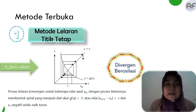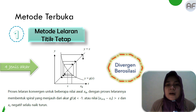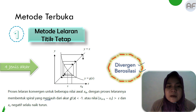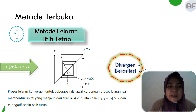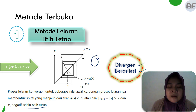Yang terakhir adalah divergent berosilasi. Ciri dari divergent adalah menjauhi akar sejatinya, sedangkan ciri dari berosilasi adalah nilainya selalu naik turun, sehingga bentuknya seperti spiral seperti obat nyamuk.